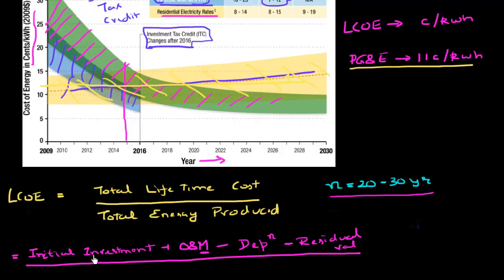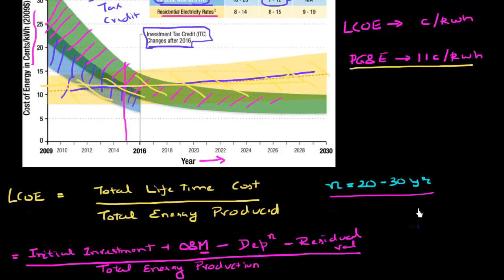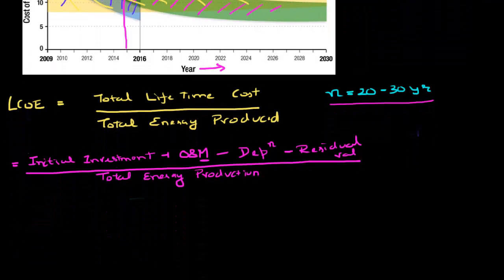In the denominator, I have the total energy production — whatever energy is produced per year, I need to take a summation of that over the full life cycle as well. Let me now go ahead and express this more mathematically.